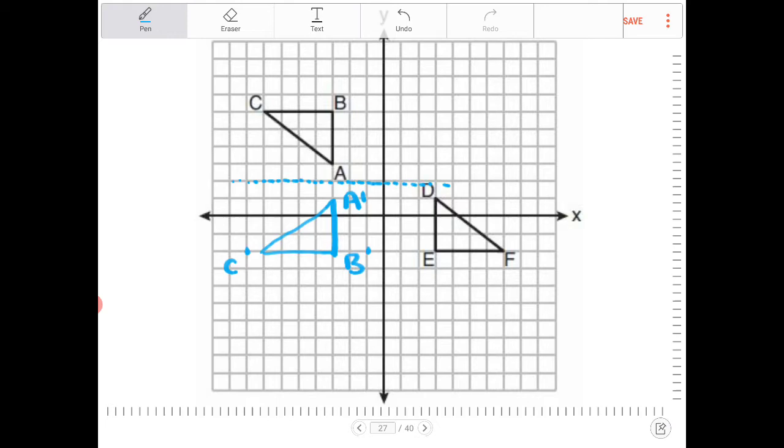And then if I perform another reflection, this time over the line x equals 0 or the y-axis, then A prime will land on D, B prime will land on E, and C prime will land on F.